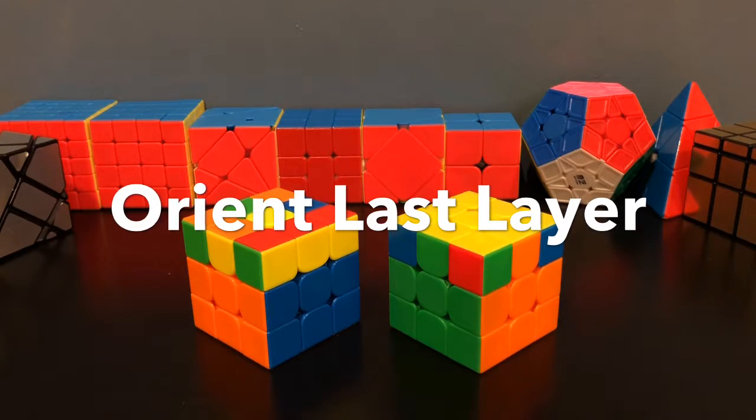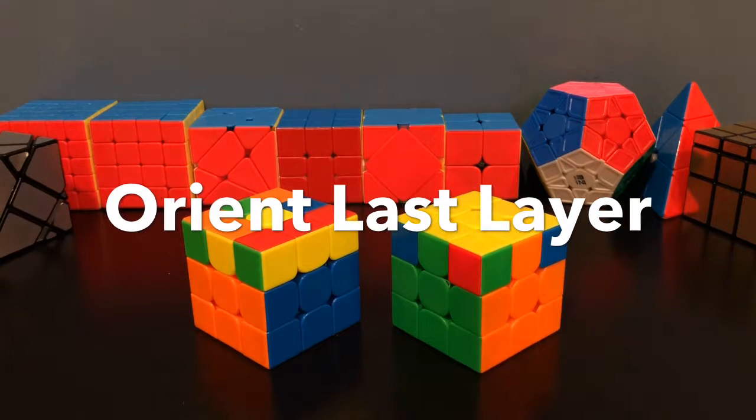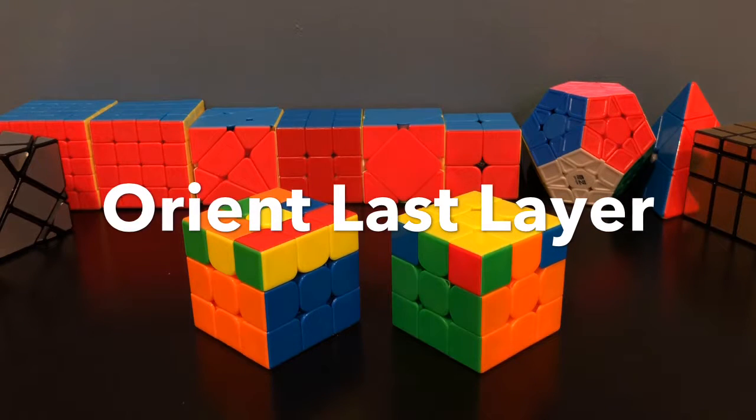To orient the last layer of a 3x3, it essentially just means having all the yellow pieces facing up. As you can see, just because the yellow pieces are facing up does not mean that the cube is done.